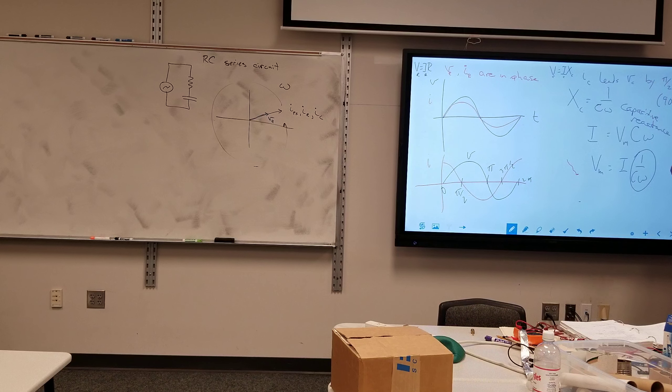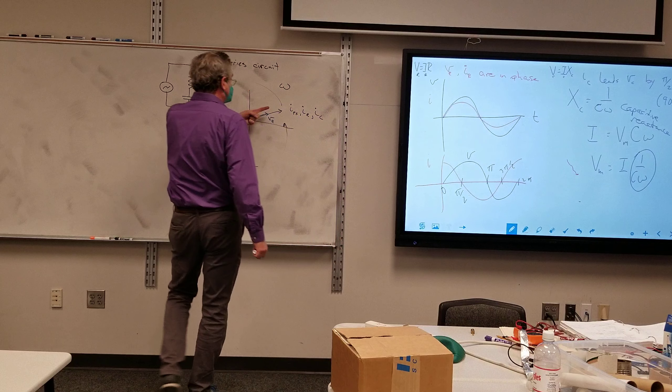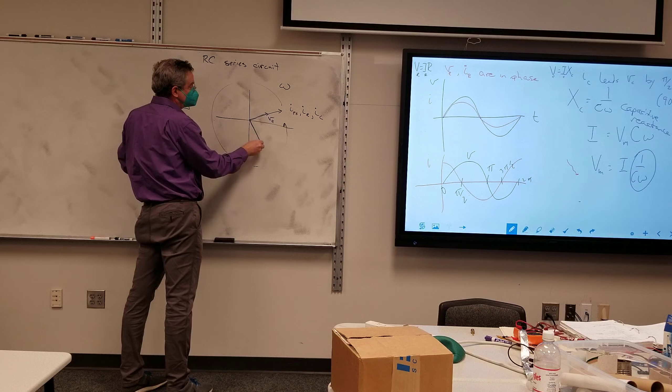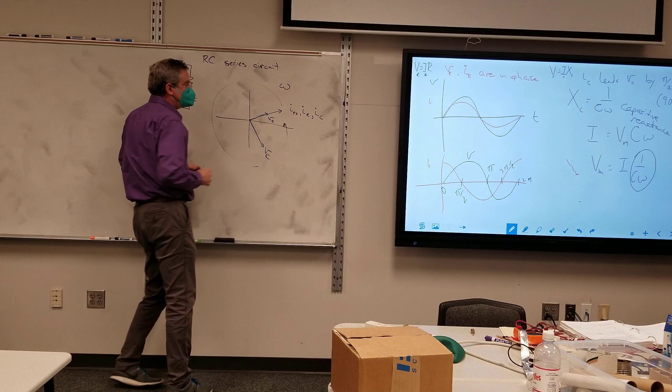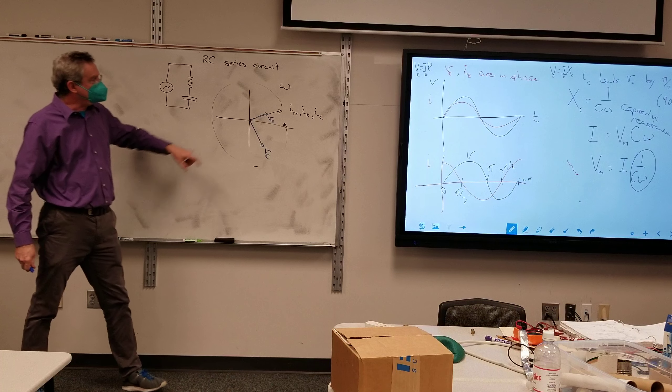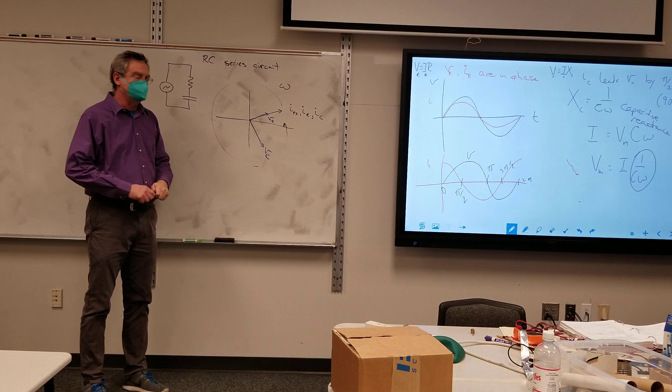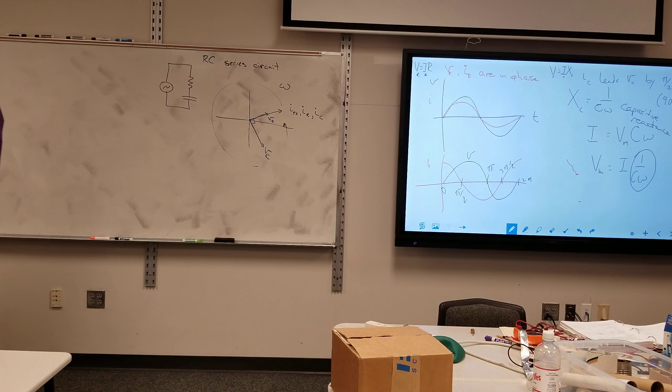However, for my capacitor, my current arrow leads the voltage arrow by 90 degrees. So if that's my current arrow, that's going to lead. So my voltage arrow is lead. So this is in front because it's spinning around counterclockwise. This leads by 90 degrees. That's a 90 degree angle.